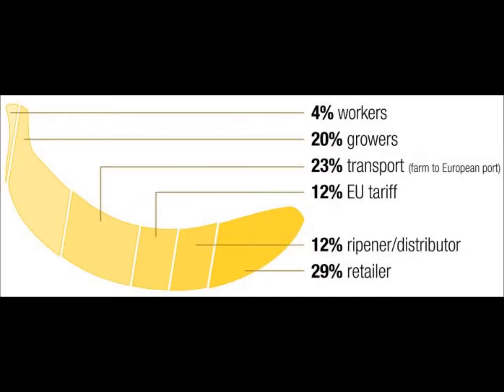This is an example of how countries that produce raw materials are taken advantage of. In this case, the workers walk away with 4% of the income but the retailer 29%.